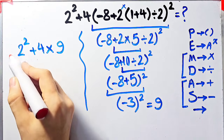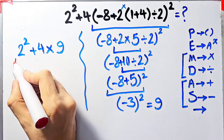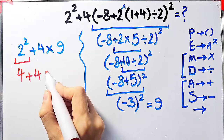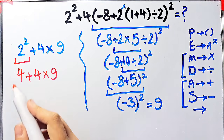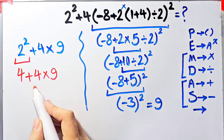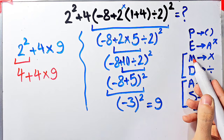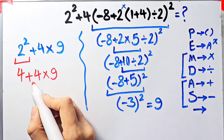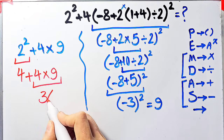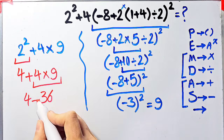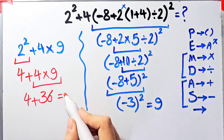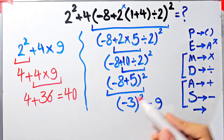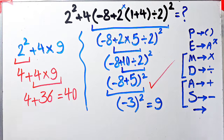In this step we have exponent, addition, and multiplication. First we simplify the exponent: 2 to the power of 2 equals 4. Now the question is 4 plus 4, then times 9. We simplify the multiplication first because it has higher priority than addition: 4 times 9 equals 36. Now 4 plus 36 equals 40. The final answer of this question is 40.